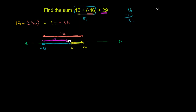So if we do 31 minus 29, that's clearly just going to be equal to 2. But since it's negative 31 plus 29, it's going to be negative 2 — we haven't moved far enough to the right to pass 0. The length of this white bar, the absolute value, is going to be 2. Two plus 29 is 31, but we're operating to the left of 0, so it's negative 31, and this answer is negative 2. So our final answer is negative 2.